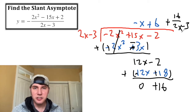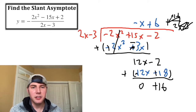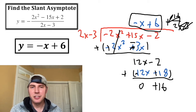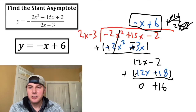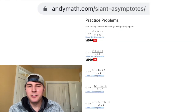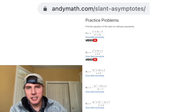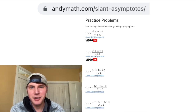As x approaches positive or negative infinity, this whole remainder term approaches 0, so we drop it to get the equation of our asymptote. Our final answer is y equals negative x plus 6. That's how to find slant asymptotes. If you want to try a couple more, there's a practice page on andymath.com — link in the description.